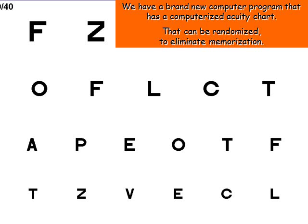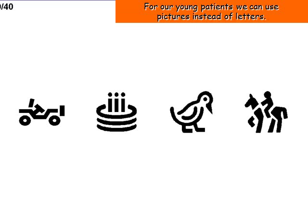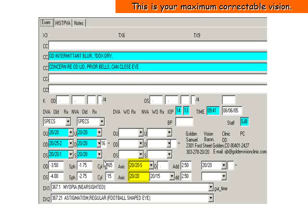Our office is also equipped with a new program that has computerized acuity charts. This means we can randomize the charts to eliminate memorization and collect more accurate data. We can single out lines of letters. For our young patients, we can use pictures instead of letters. In our acuity charts, we can also single out characters. Handwritten charts are a thing of the past.